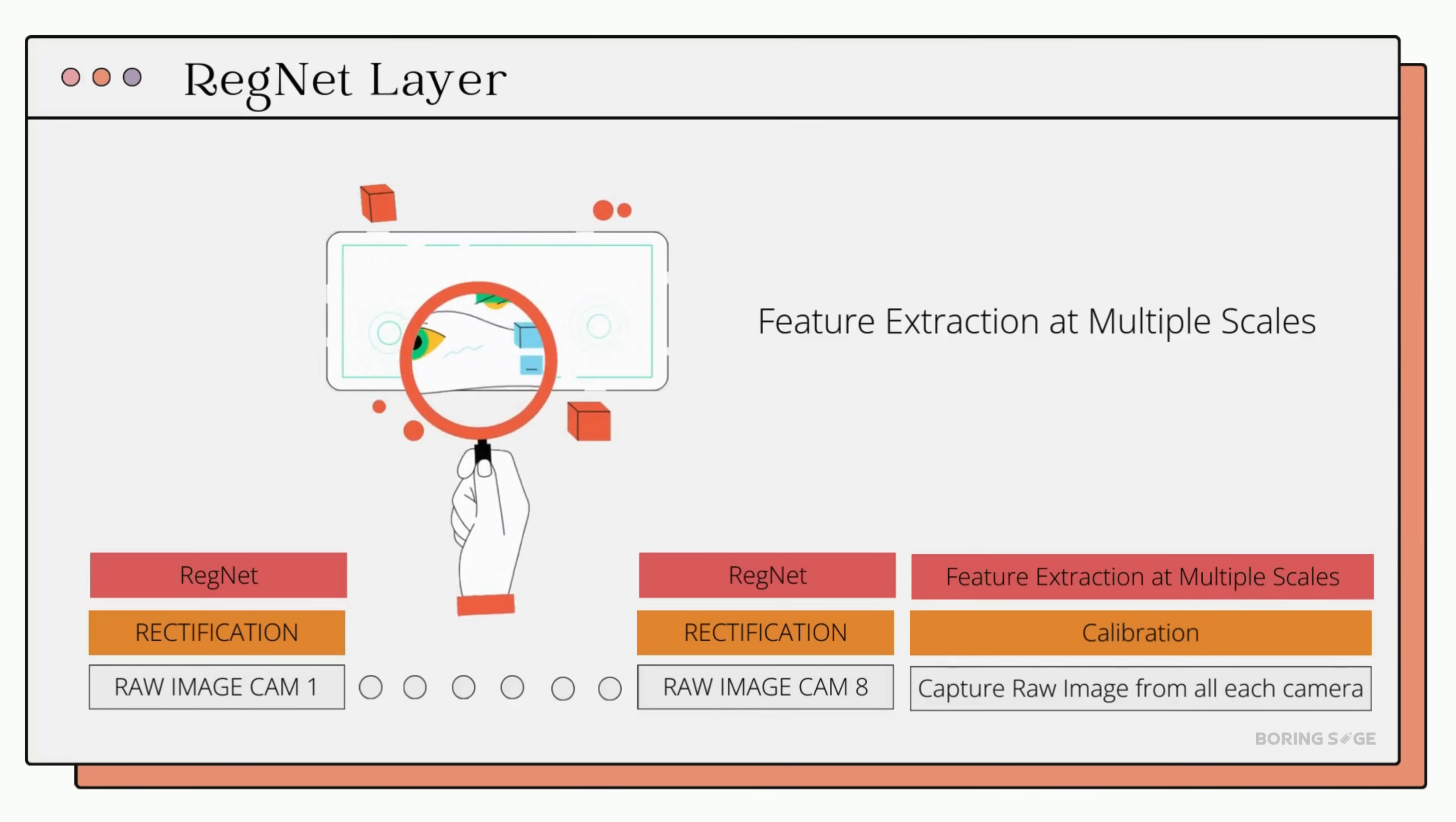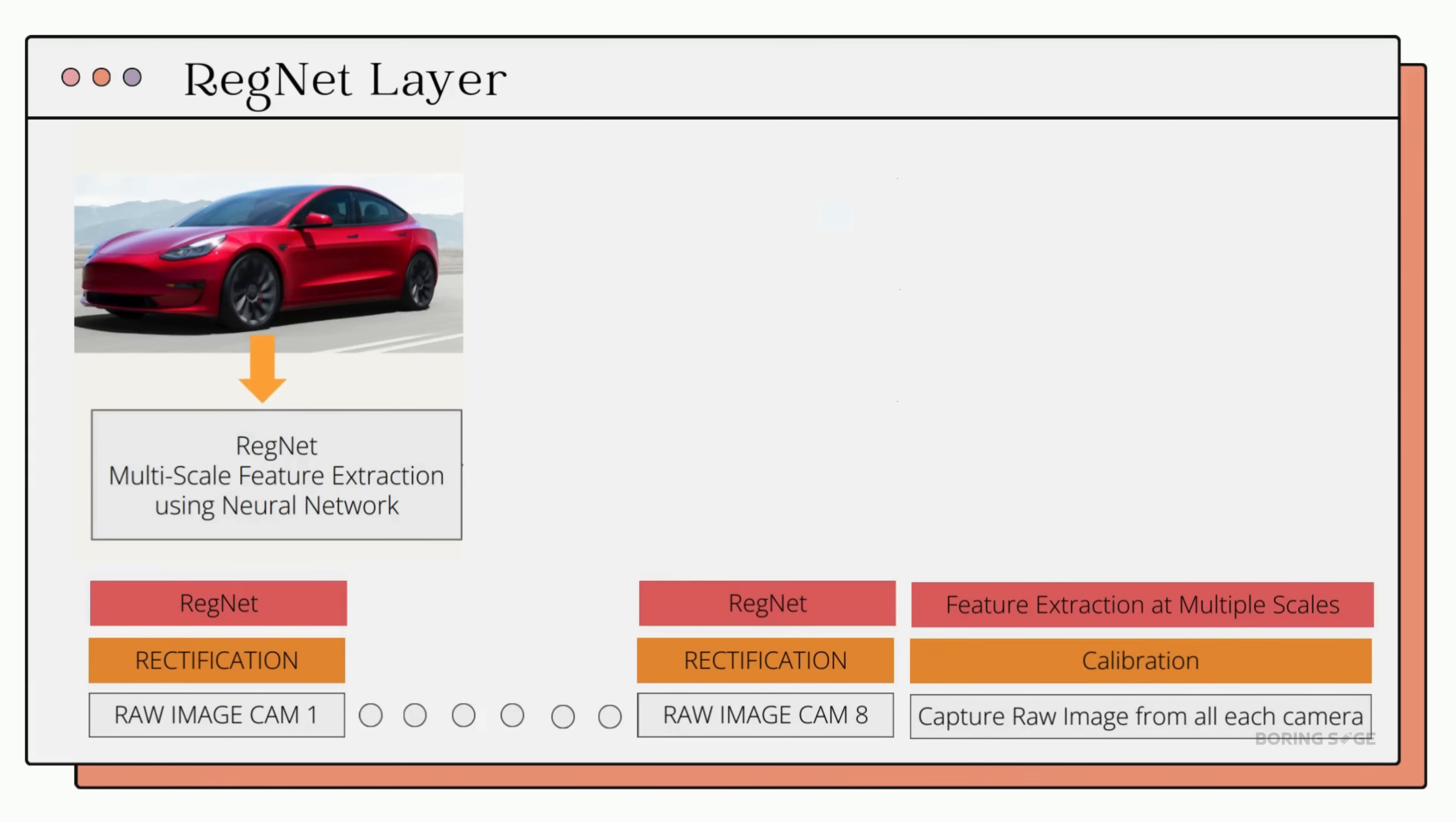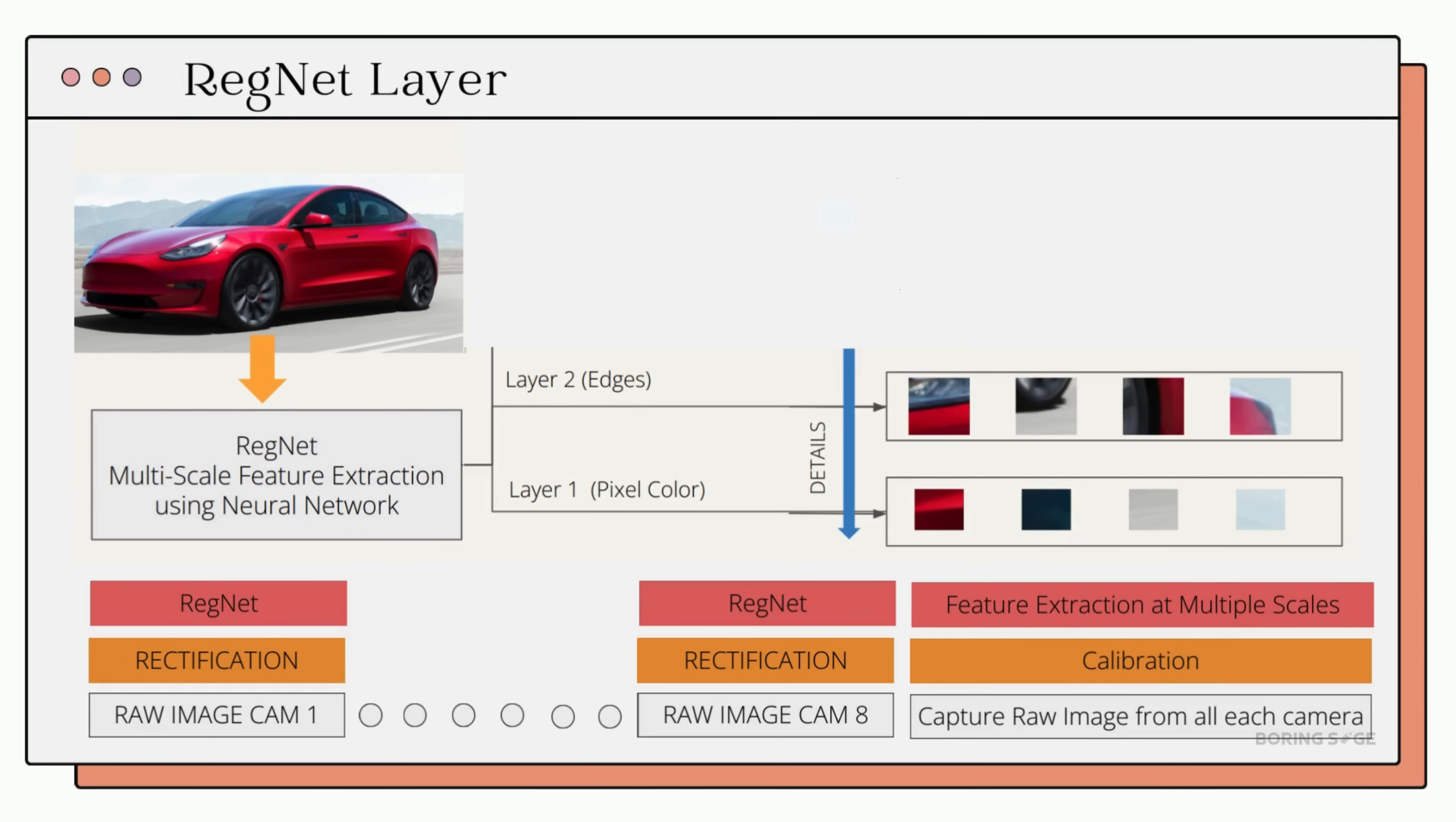After calibration, the aligned images go through the RegNet layer. This is where deep learning comes in. RegNet is simply a neural network which extracts key features from images, and it does so at multiple scales. Let's take this image of a Tesla to better understand how this process works. On the left, we have the image that's sent to the RegNet layer, and on the right we see what the outcome looks like after the feature extraction process.